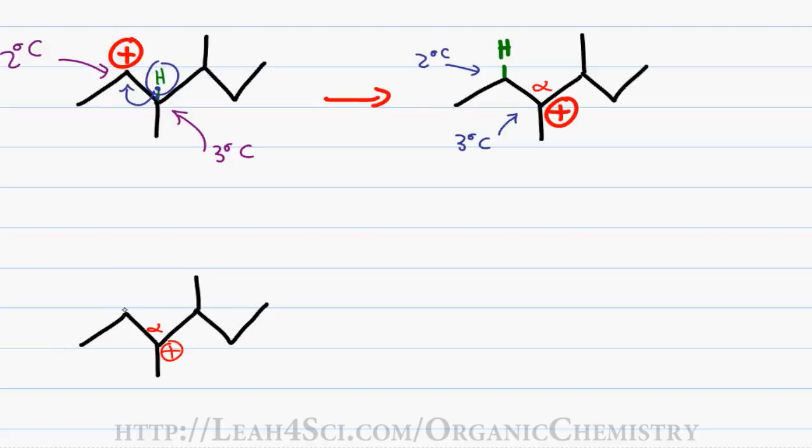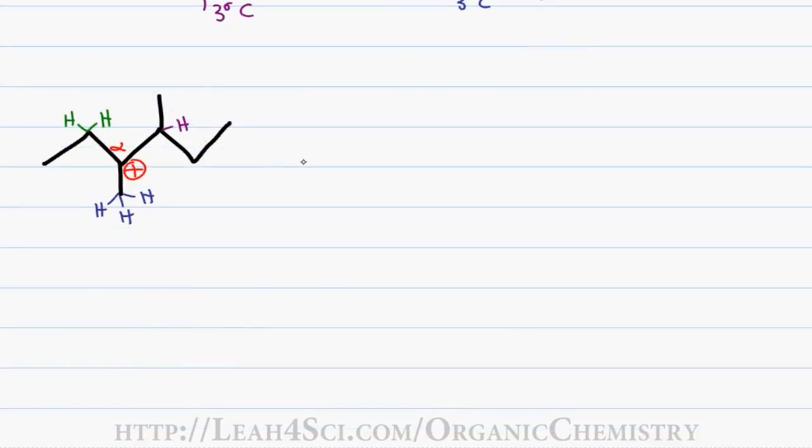To the left of the alpha carbon, we have a secondary beta carbon with two hydrogens which I'll show in green. Below the carbocation, we have a primary beta carbon with three hydrogens which I'll show in blue and to the right of the carbocation, we have a tertiary beta carbon with one hydrogen which I'll show in purple. Three new beta hydrogens gives me three new products.